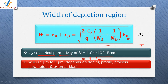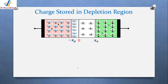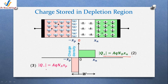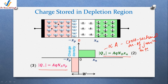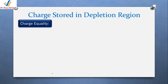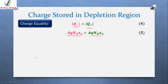After the width, let's find out the amount of charge stored at the p and n sides of the diode. The magnitude of the charge on the n side and the p side is given by equations 2 and 3 respectively. The charge is directly proportional to A, the cross-sectional area of the junction in the plane perpendicular to the page, the charge q of the carrier, the concentration d, and xn — the extension of the depletion layer towards the n side. A similar formula applies for the p side.